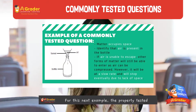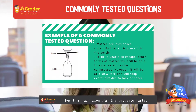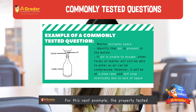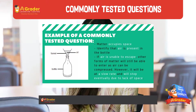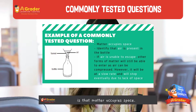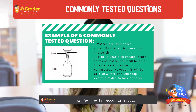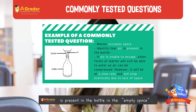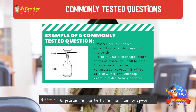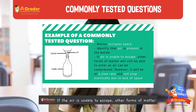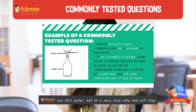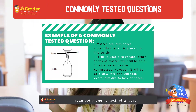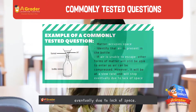If we look at another example, the property tested here would be that matter occupies space. Firstly, students have to identify that air is present in the bottle, in the empty space. And if air is unable to escape, oil or other forms of liquid or matter is unable to enter the bottle.